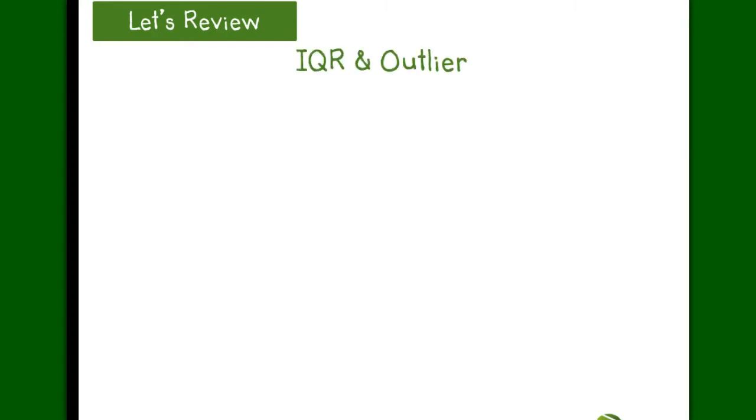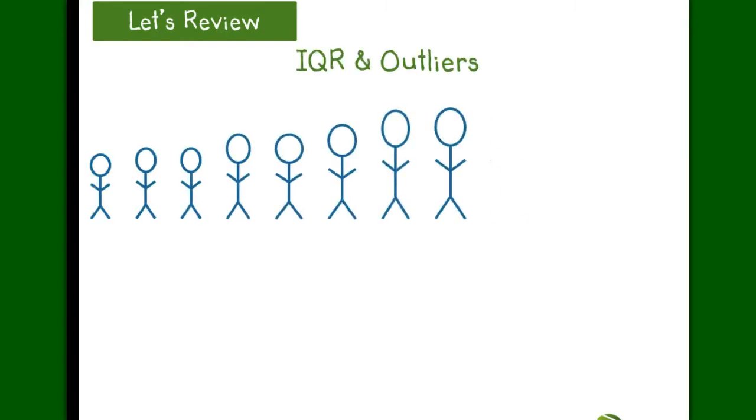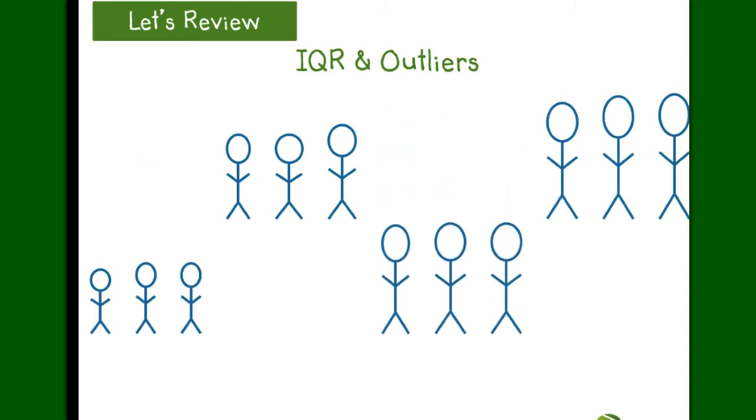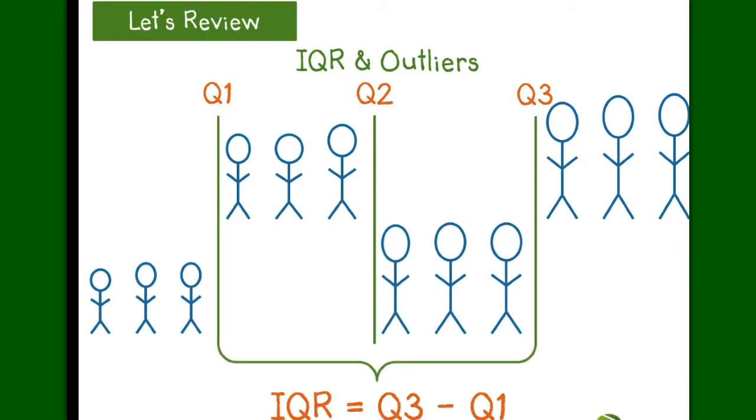When looking for interquartile range, we've talked about having the entire class line up by height and then splitting them into four groups. Interquartile range is how spread out the middle of our data is. So our equation is interquartile range equals quartile 3 minus quartile 1.